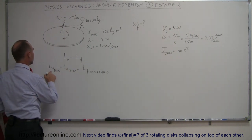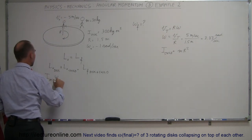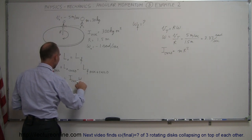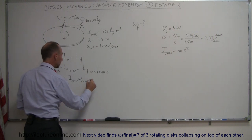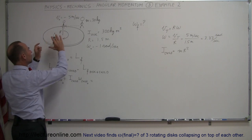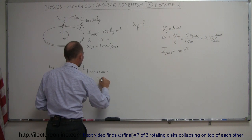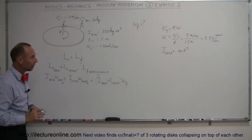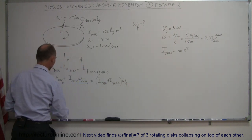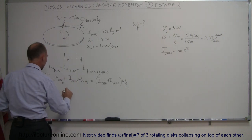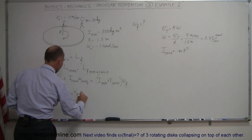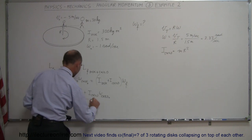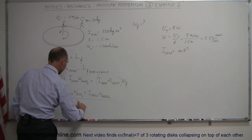Now we can plug numbers in. The angular momentum of the disc is the moment of inertia of the disc times omega of the disc initial, plus the moment of inertia of the child times the equivalent angular velocity of the child — that's the initial side. On the final side, the disc and child are together, so we combine i of the disc plus i of the child and multiply by their combined angular velocity. Solving for omega final: it equals (i_disc × omega_disc_initial + i_child × omega_child_initial) divided by (i_disc + i_child).